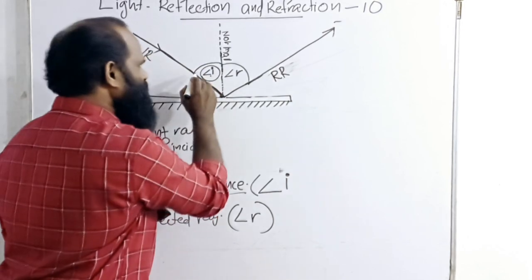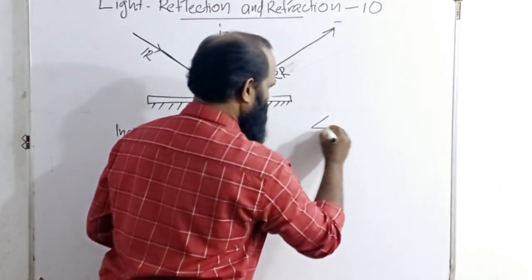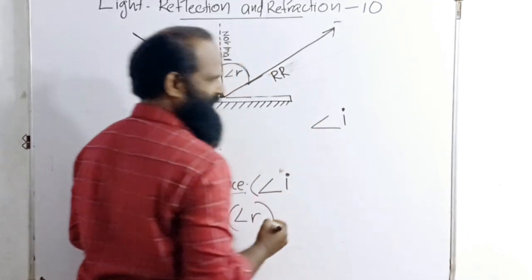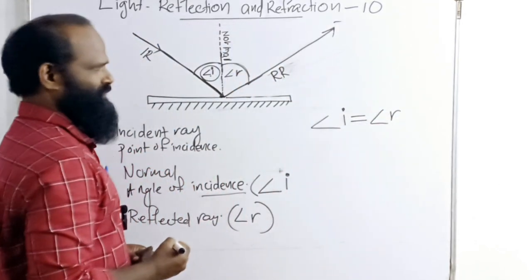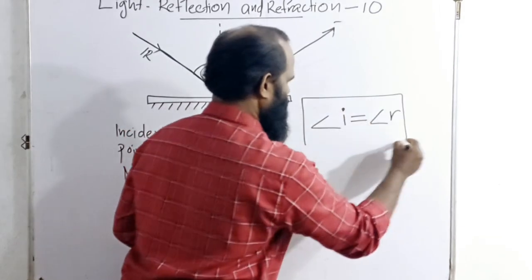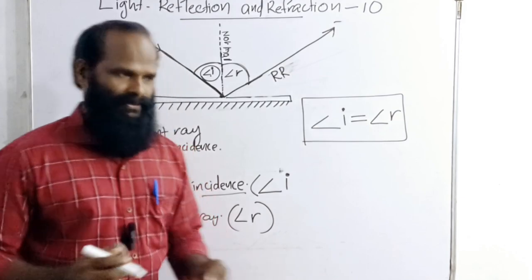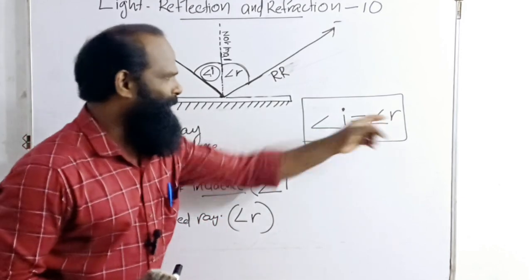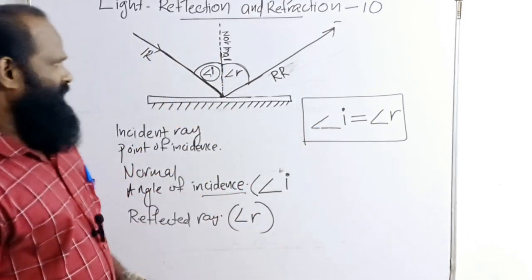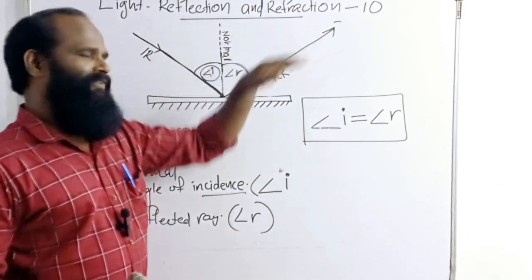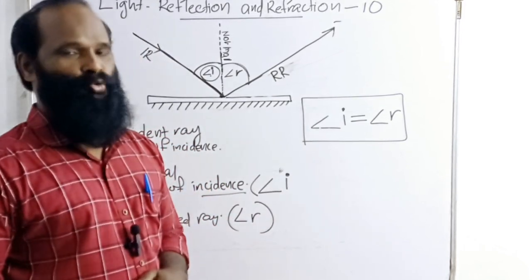When you measure these two angles, one thing is sure: the angle of incidence is definitely equal to the angle of reflection. Angle of incidence and angle of reflection are definitely equal. These two angles are equal only when the reflection takes place from a smooth and plain surface.